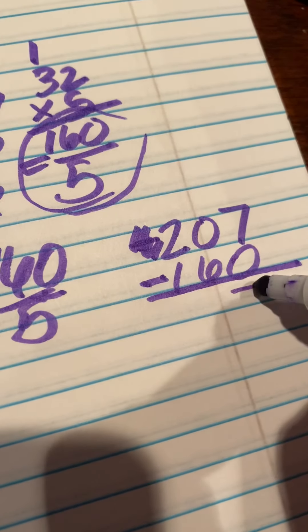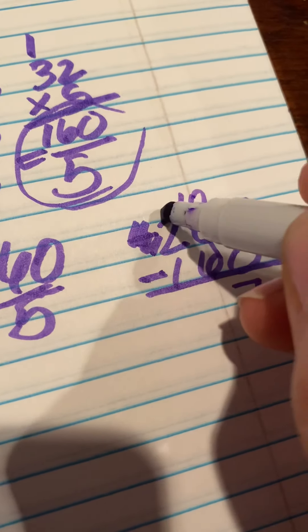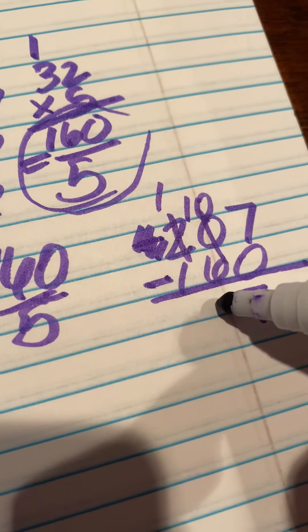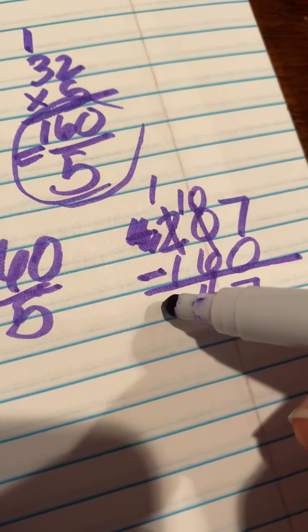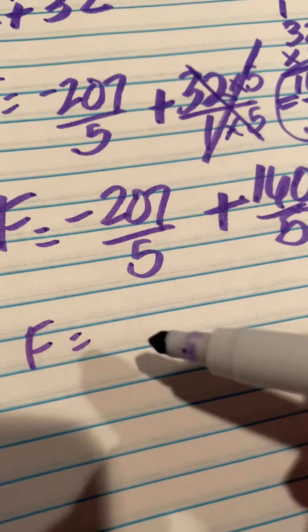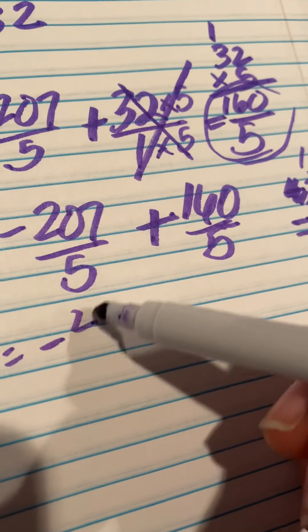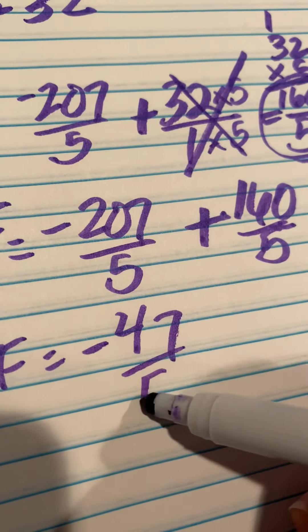So 7 minus 0, 7. This becomes a 10. This will become a 1. 10 minus 6 is 4. And we have 47. And we have to make that negative. So our final answer, kind of our final answer, is negative 47, because that's what we got over here, over 5.